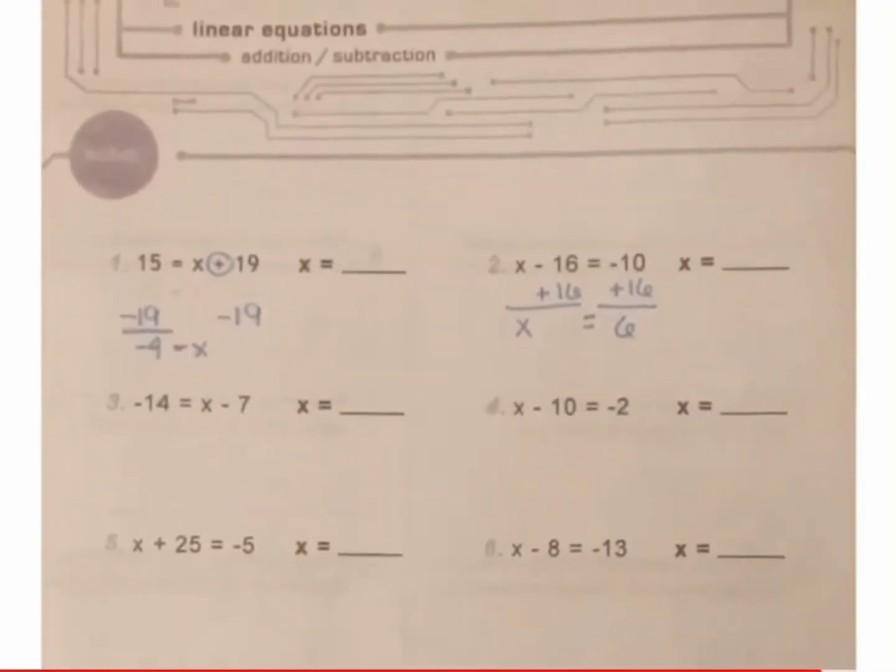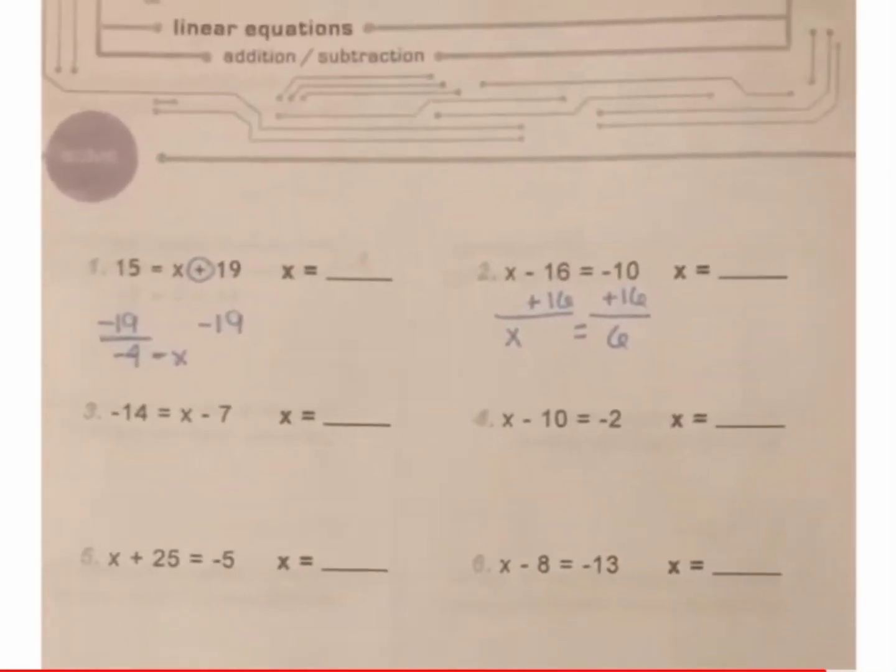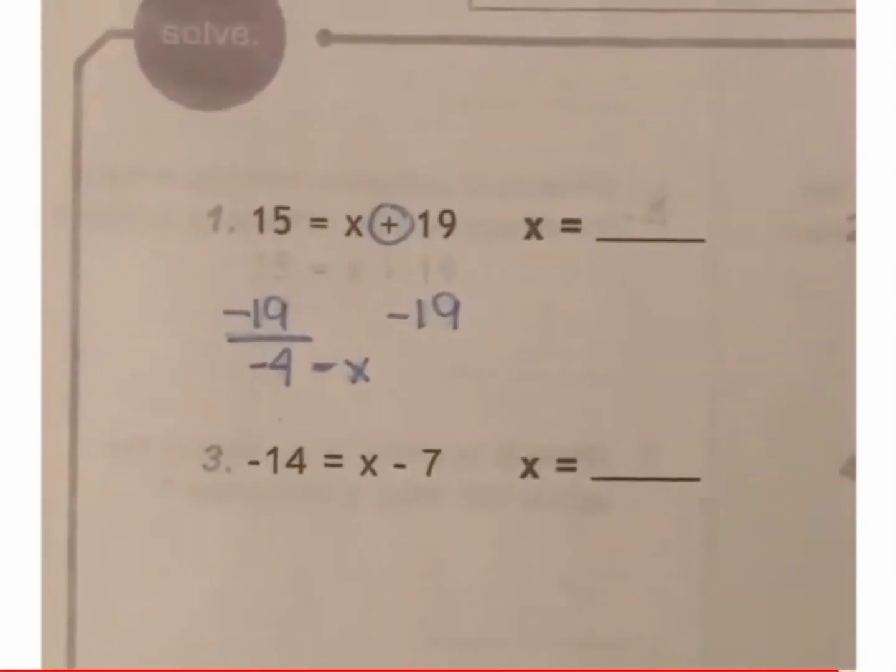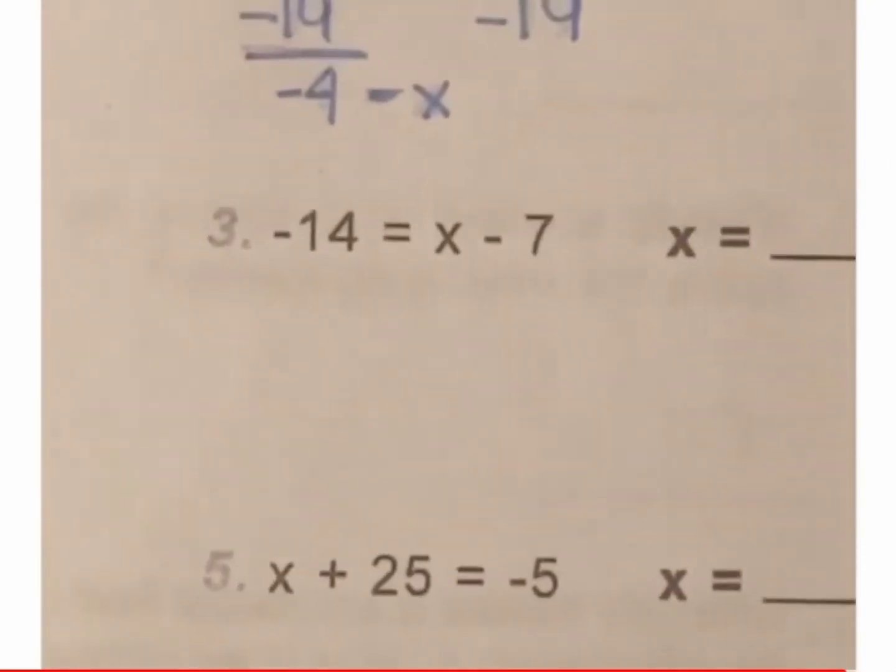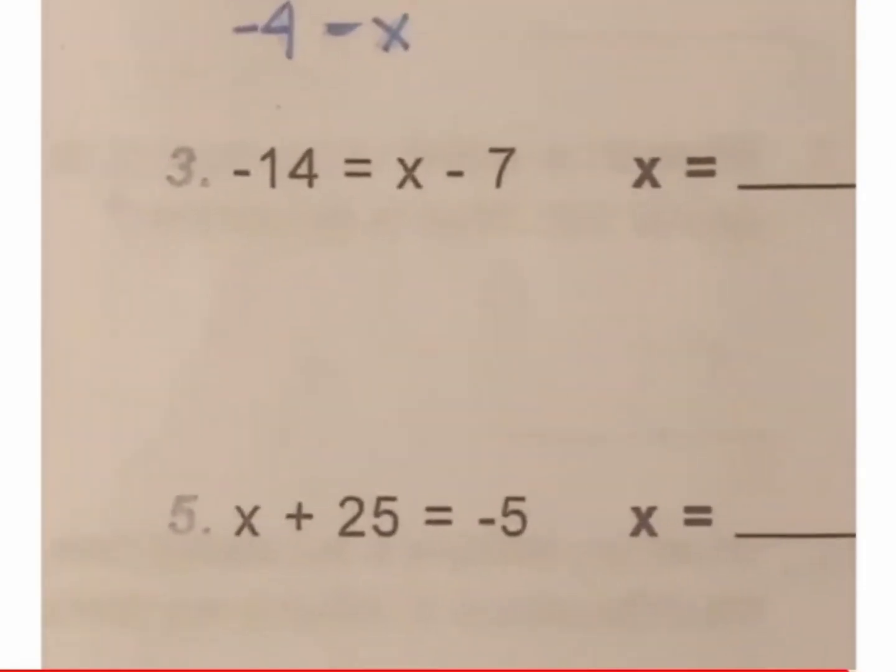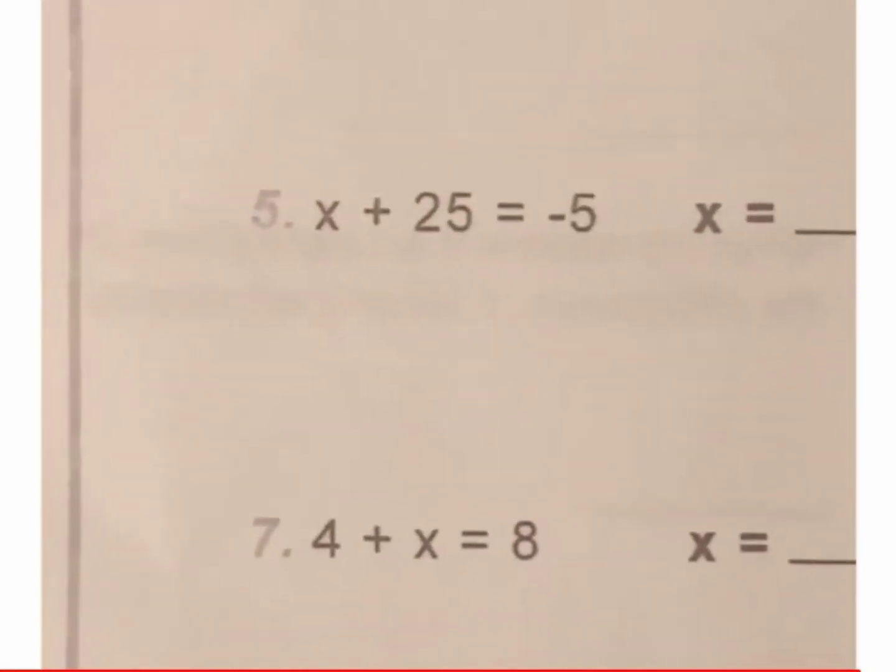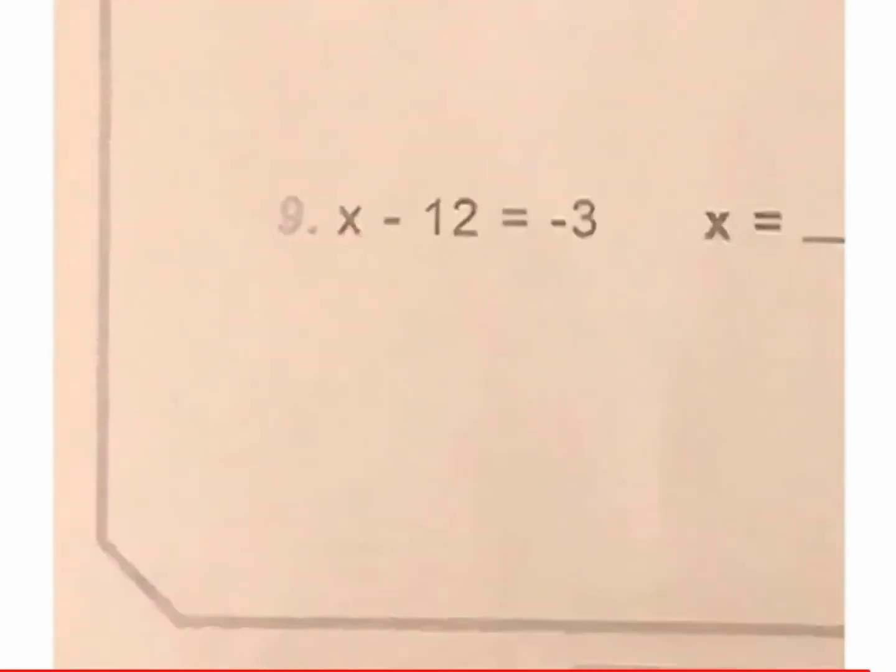All of these problems are essentially the same as the first two. You're adding and subtracting. And so, in order to solve, you will always use the inverse operation. So, for example, number 3 is x minus 7. So, you'll add 7 to both sides. Number 5 is x plus 25, so you'll subtract 25 from both sides. Number 7 is 4 plus x, or x plus 4. 4 is positive, so you'll subtract 4 from both sides. And, finally, down on number 9, you have x minus 12, so you'll add 12 to both sides.